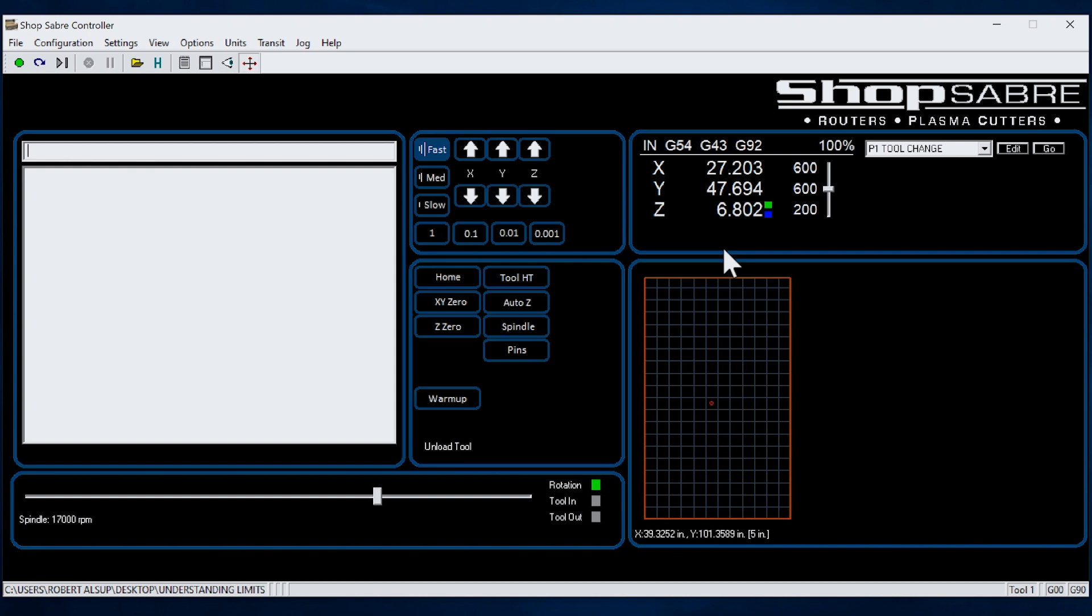The operational buttons are grouped together. For instance, over here, these have to do with jogging the machine. So you'll see the x-axis, the y-axis, and of course, z. And I can jog in fast, medium, or slow. Or for special setups sometimes, I may want to just move a thousandth of an inch at a time. So when I'm touching tools off, that's really common to use that.